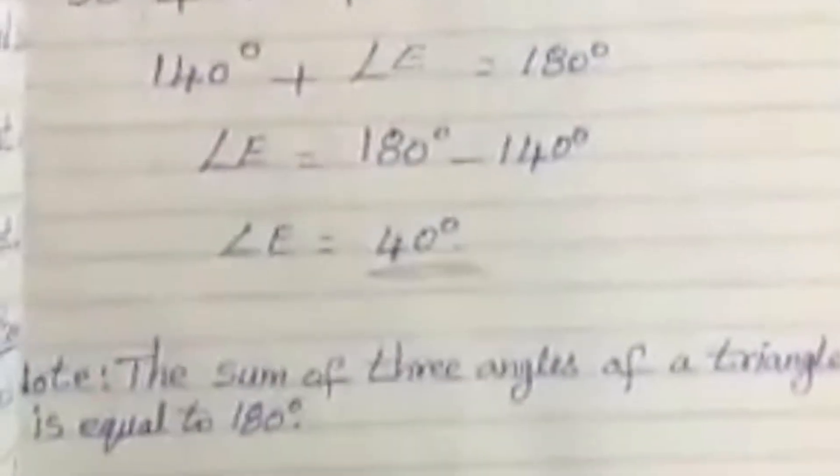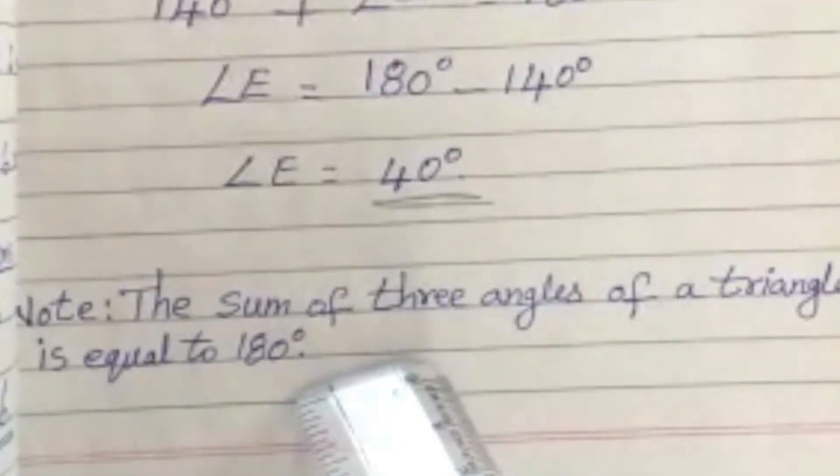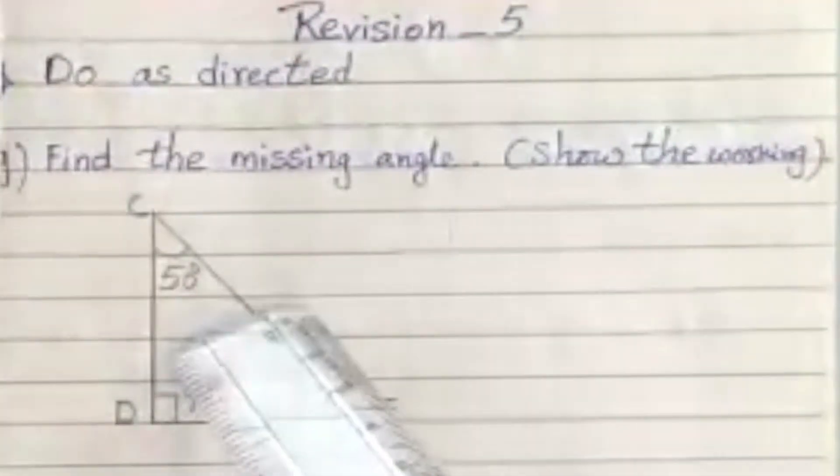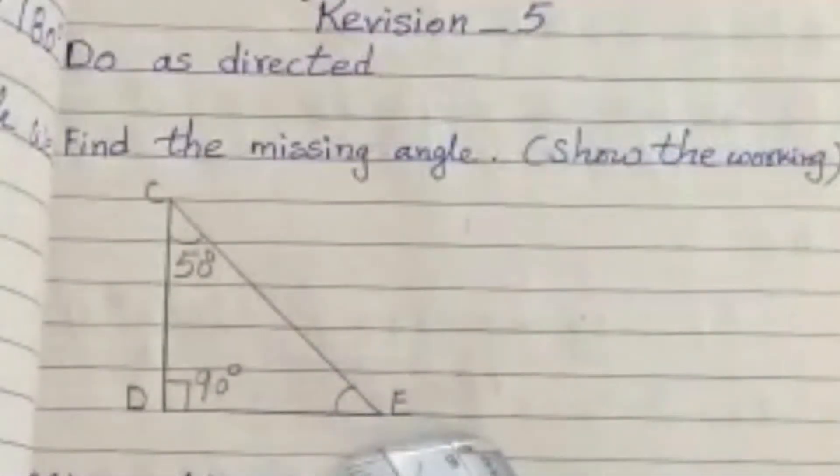The sum of three angles of a triangle is equal to 180 degrees. See the question here. Angle C is 50 degrees, angle D is 90 degrees, angle E is the missing angle.